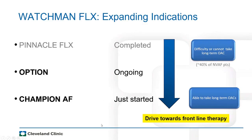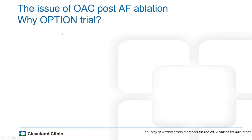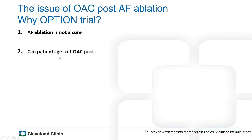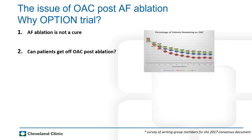The OPTION trial rationale: patients undergoing AFib ablation are told ablation is not a cure — they will continue to have some AF. Up to 40% of post-ablation patients believe it is a cure and stop OAC on their own. Yet there is no randomized clinical trial showing it is safe to stop OAC post-ablation in patients with a high CHADS-VASc score. We have no data that AFib ablation reduces stroke risk in high-CHADS-VASc patients.